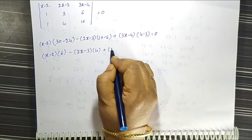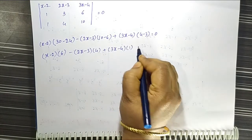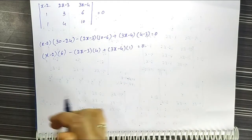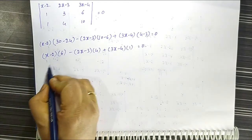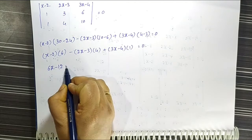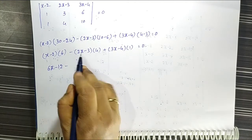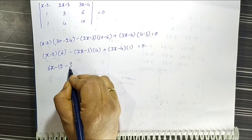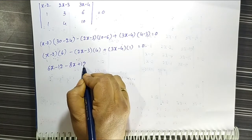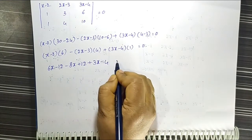After multiplication: 6x - 12 minus 8x + 12 plus 3x - 4 equals zero. Collecting like terms, the x terms and constants simplify, giving x - 4 equals zero, therefore x equals 4. This is the solution of solved problem 7.